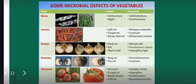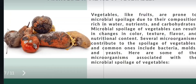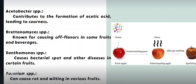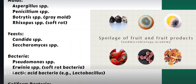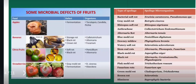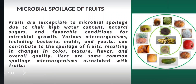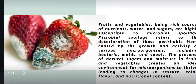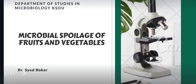With this, let us conclude this video. In this session we have given an overview of the different types of microorganisms reported to cause infection or spoilage of fruits and vegetables. See you in the next class — till then, have a nice time ahead. Good luck.